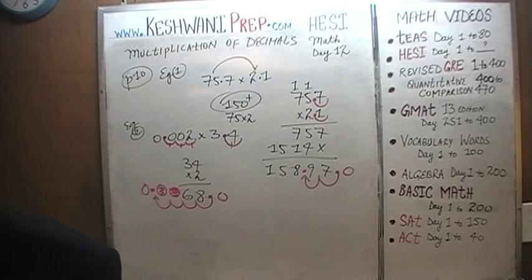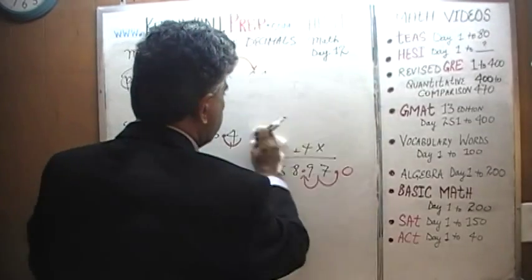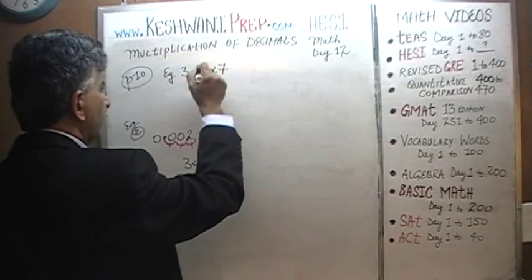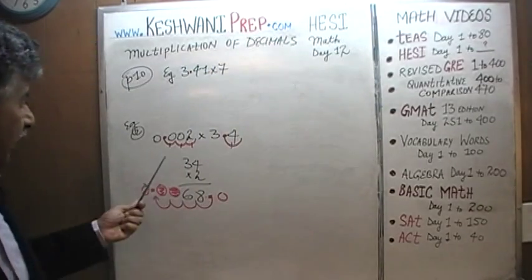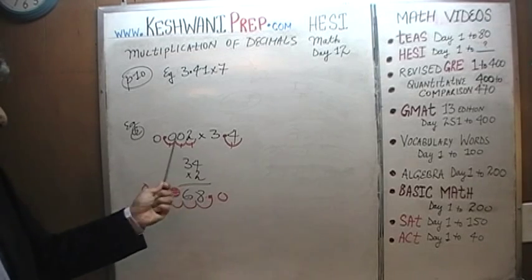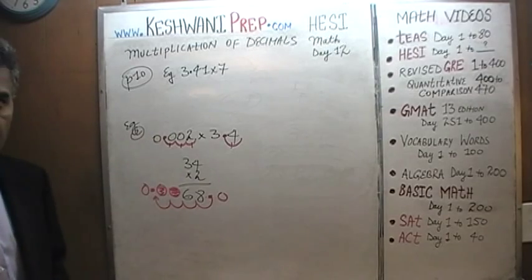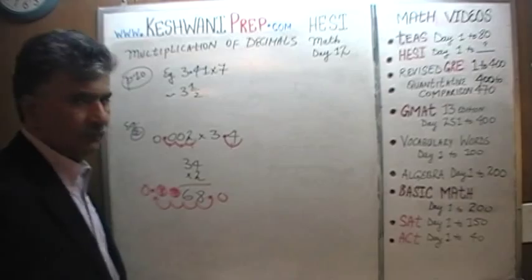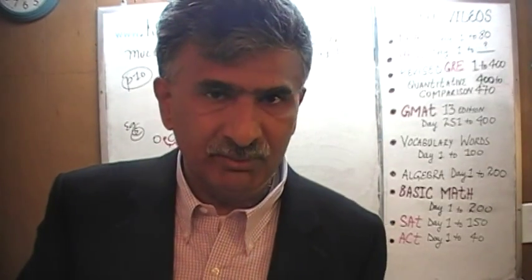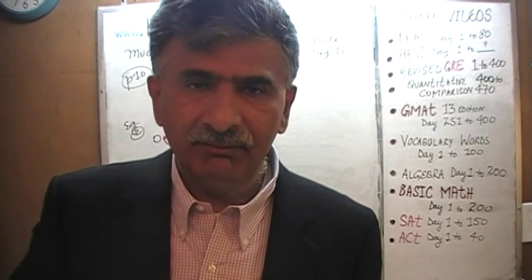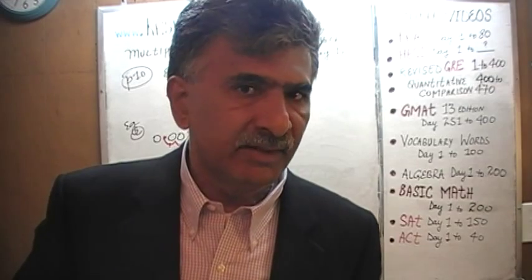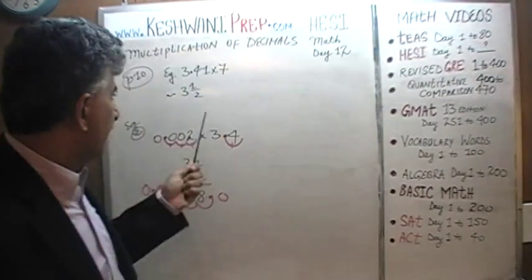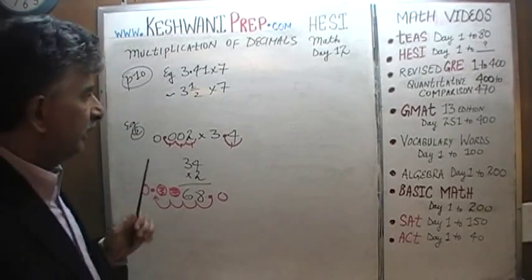Let's do the next one: 3.41 times 7. There are two quick approximations before we begin. 3.41 is approximately three and a half, so what we have is approximately three and a half times seven. Will you be able to quickly find what three and a half times seven is?